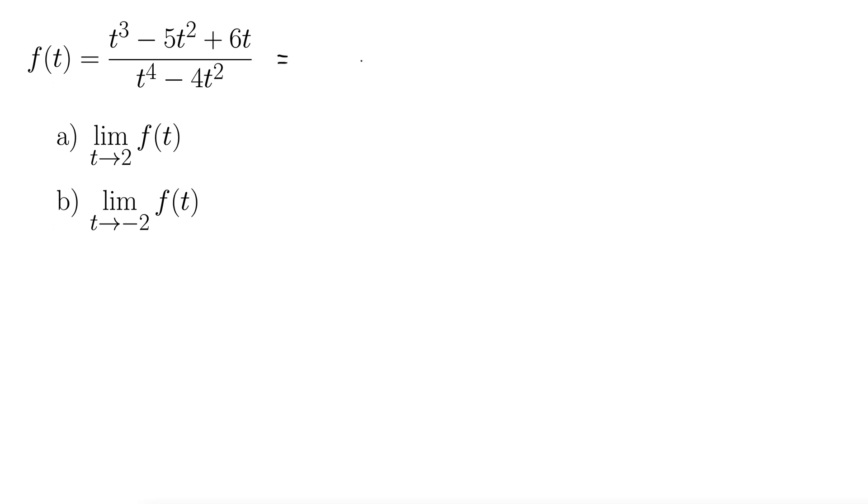We can get a t out of the top there, so that leaves us with t squared minus 5t plus 6. Down below we have t squared factors out, leaving us with t squared minus 4. I'm seeing a little bit of cancellation already as t goes away with the t squared down there.